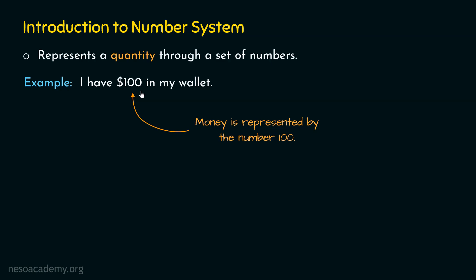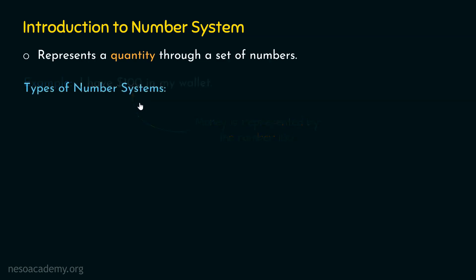Just like the decimal number system, we have other number systems as well. Now I am going to list down those number systems one by one. The first is the decimal number system, which we are well familiar with. The base of the decimal number system is 10, which means that each digit of the number can lie in the range from 0 to 9. Base 10 tells us the range of each digit of the number, which is 0 to 9.